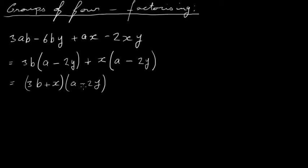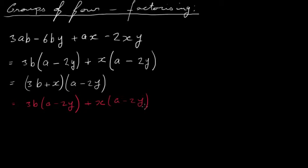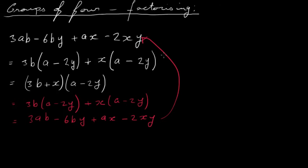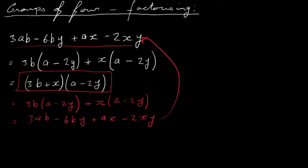To verify this, if you multiply out the two factors you should end up back with the original expression. Multiplying out: 3b times (a minus 2y) gives 3ab minus 6by, and plus x times (a minus 2y) gives ax minus 2xy. That's exactly what we started with, so it does work. This factored form is what we get when we factorize the original expression.